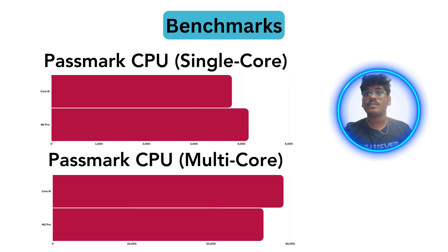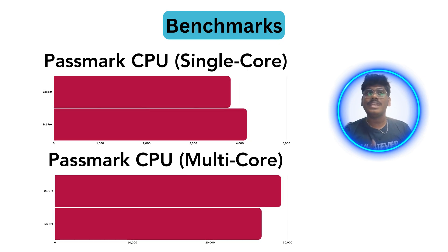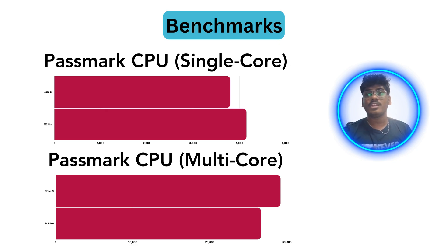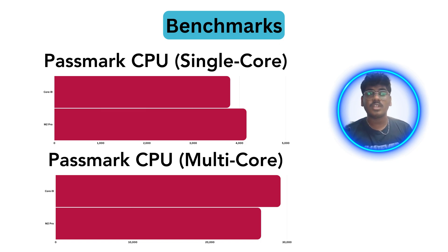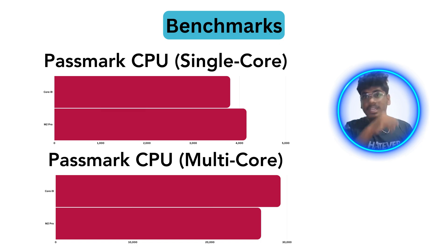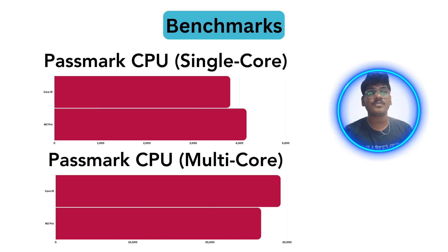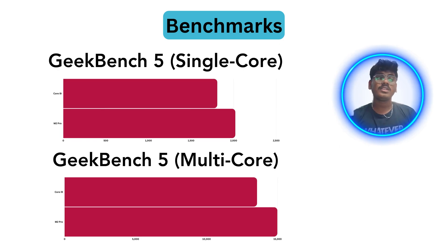In the PassMark CPU benchmark, at the single-core level, Intel i9 scores 3800 while M2 Pro scores 4152 — about 9% better performance for the M2 Pro. In multi-core, Intel i9 scores 29,162 and M2 Pro scores 26,633 — around 9% better performance for the i9 in multi-core.